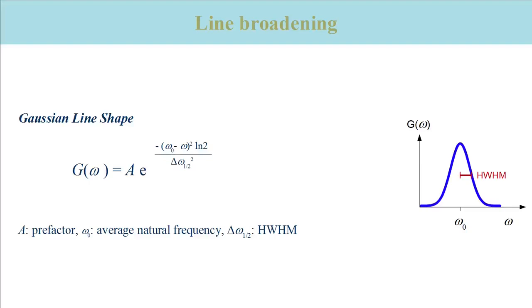When we have inhomogeneous broadening, individual molecules have different energy gaps or in other words, they have different natural frequencies. The statistical distribution of these natural frequencies around an average value is described by a Gaussian function. A Gaussian function is a natural exponential function with a squared expression in the argument.